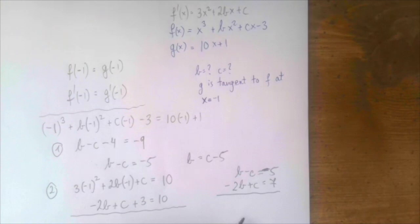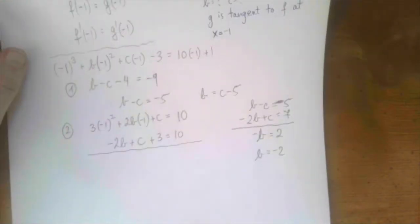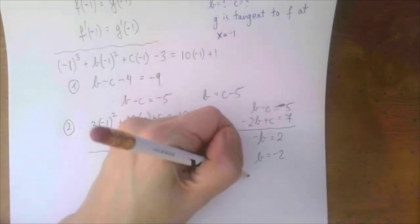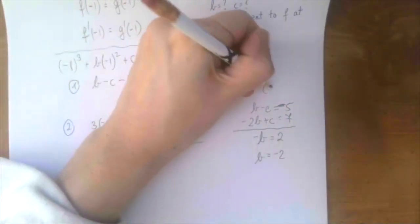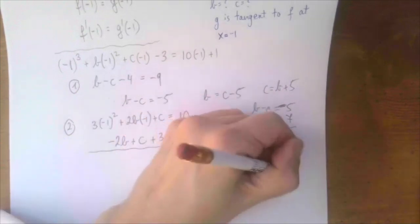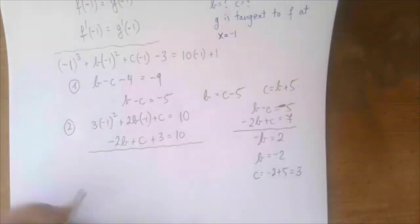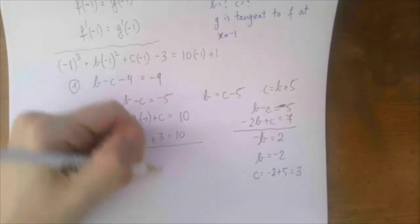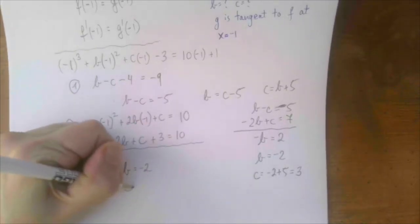Adding the two equations: -b = 2, so b = -2. From the first equation, c = b + 5 = -2 + 5 = 3. The answer is b = -2 and c = 3.